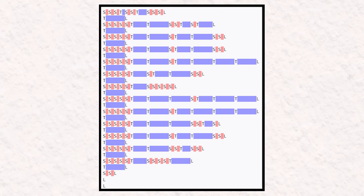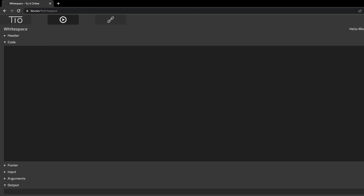Each space, tab, or line feed character is preceded by the identifying comment S, T, or L respectively. All other characters are ignored by the program and can be used as comments. Coming at number 5, we have Chicken.